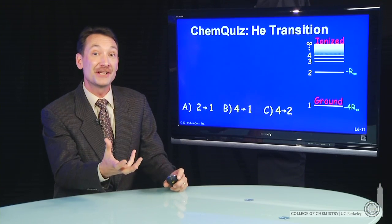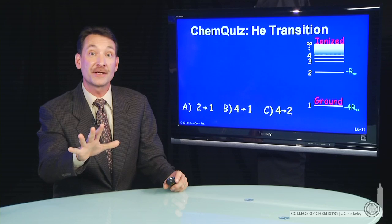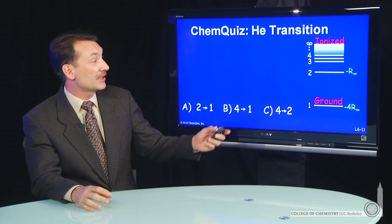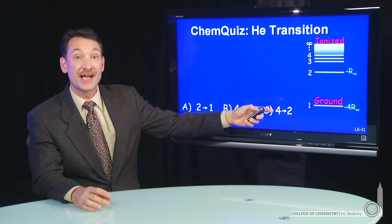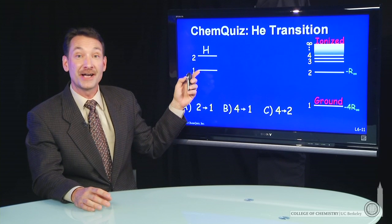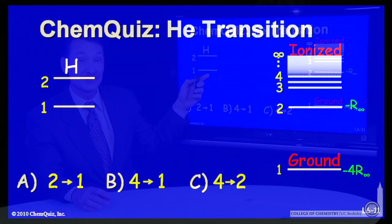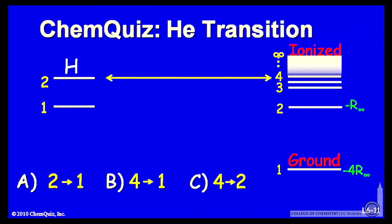We're comparing hydrogen atoms to helium plus ions, both one-electron systems. If we look at the helium plus ion energy levels and compare them to the hydrogen atom energy levels, what do we see? Well, we notice that 2 and 4 line up as 1 and 2 line up.